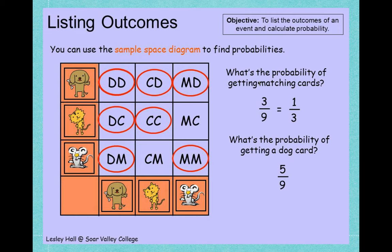Again, this is a sample space and these are outcomes. There are nine outcomes, and all of the outcomes are our sample space.